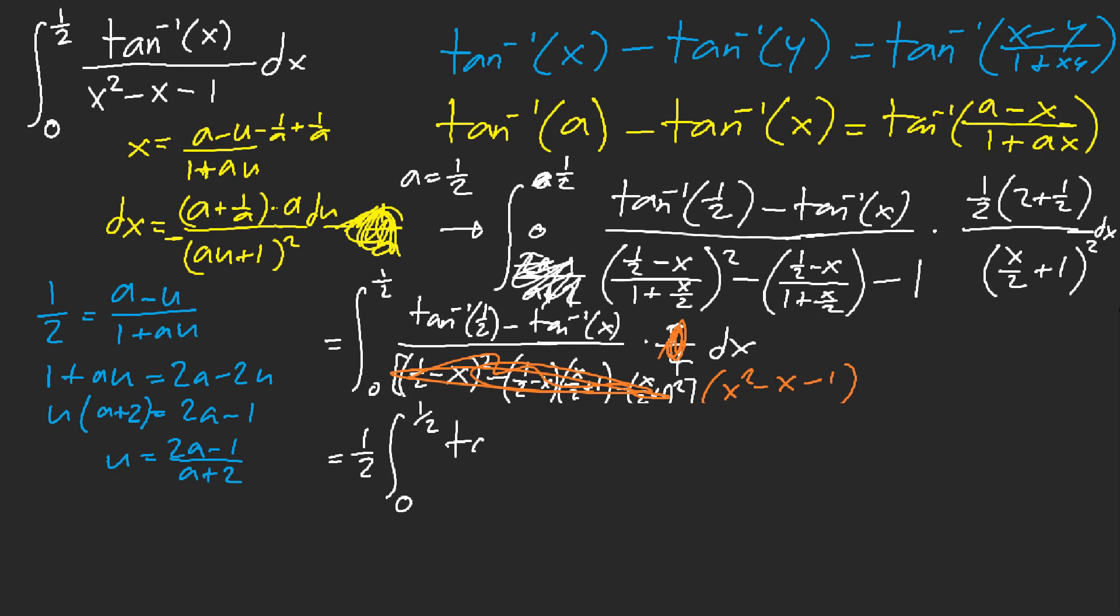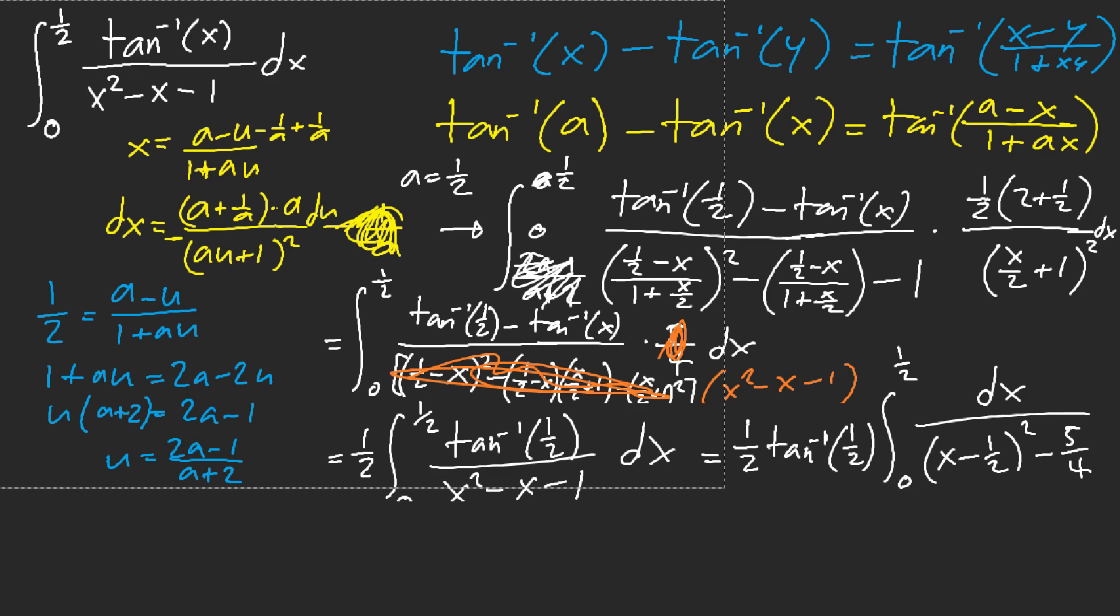That means that we could do, we could shove this back to its integral. And now we can finally add it together. We get inverse tangent half over x squared minus x minus one dx. Ah. And now we can go ahead and simply solve this. I don't know how to simplify inverse tangent of half. But here. This portion here is just completing the square. So it's x minus a half.